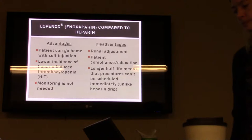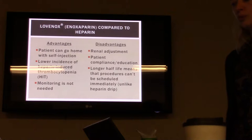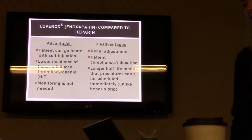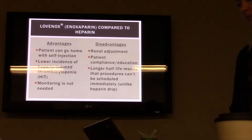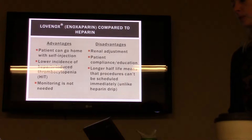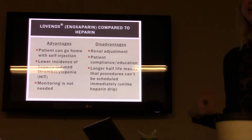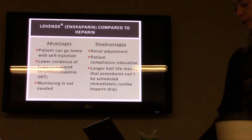Lovenox compared to heparin has certain advantages. It comes in syringe form so the patient can actually go home with self-injection, which is nice because if that's the only thing keeping the patient in the hospital they can go home. It has a lower incidence of heparin-induced thrombocytopenia, also known as HIT. And monitoring is not needed. Disadvantages: you have to look at renal function and renally adjust the dose. Patient compliance and education — you have to educate the patient on how to use it. And the longer half-life means that if you need immediate surgery, you won't be able to do it immediately. With a heparin drip you can turn it off and anticoagulation immediately stops; with Lovenox you have that 12-hour window.